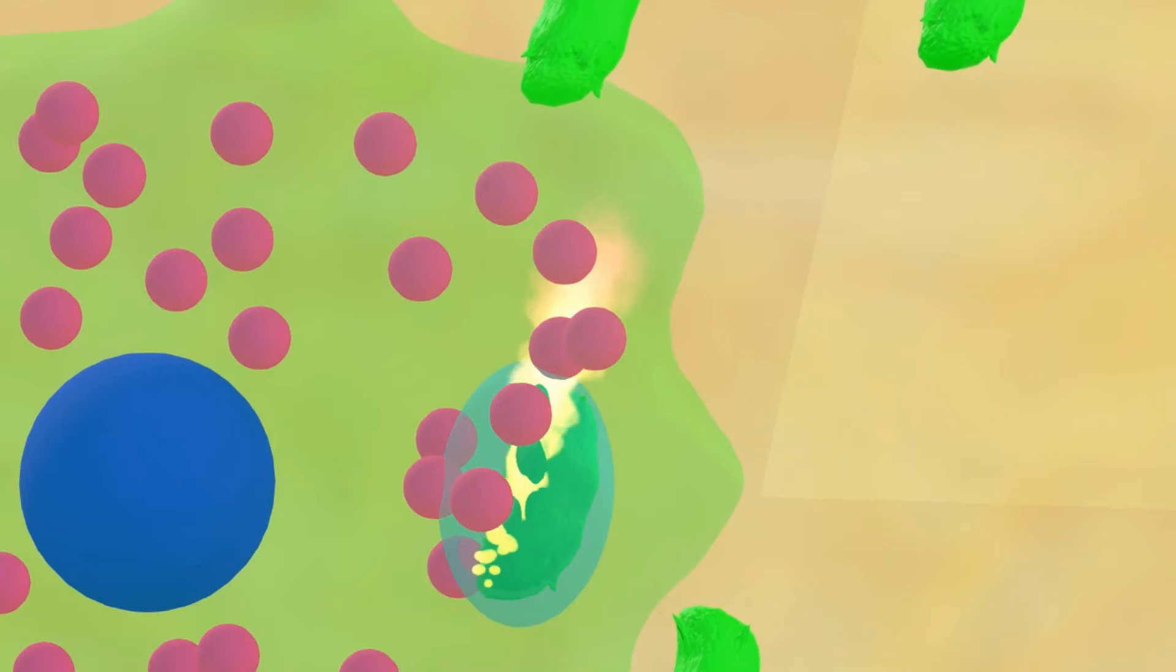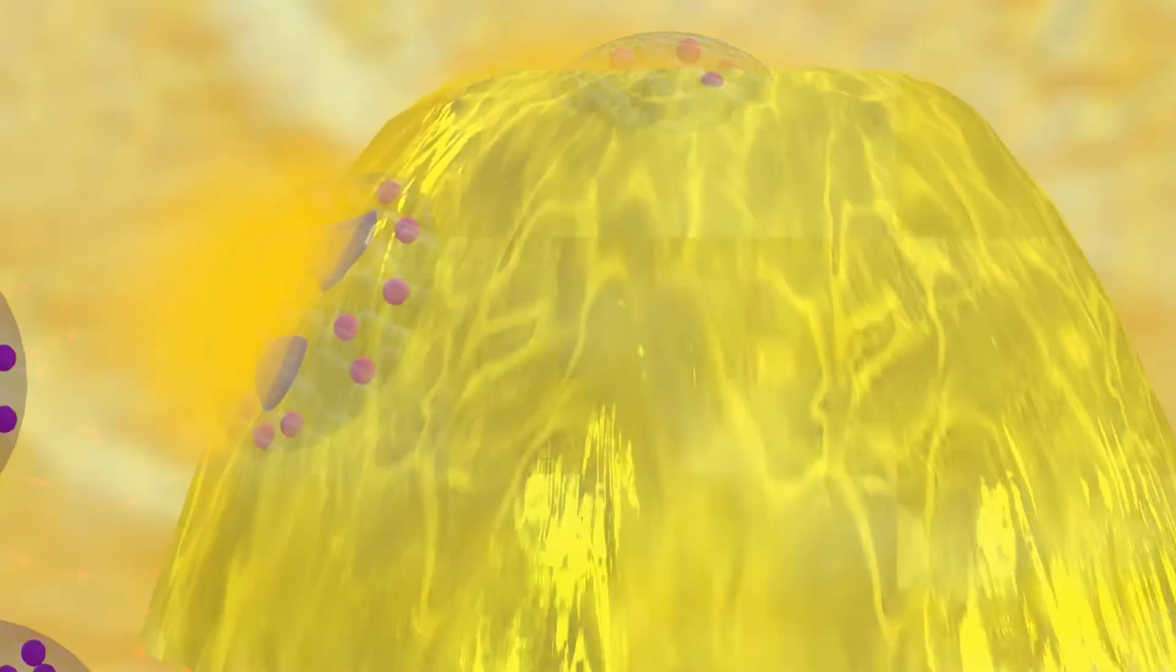Inside the phagocyte, the granules interact with the microbe and release substances which destroy the microbe into small pieces. A small piece of the foreign body moves toward the surface of the macrophage and is introduced on its surface to be used later by the B cells to produce antibodies against this type of microbe. Neutrophils undergo apoptosis, forming a thick yellowish-white liquid called pus.